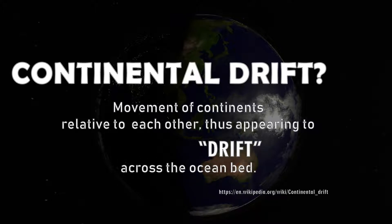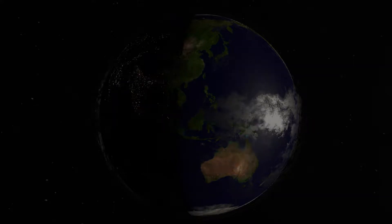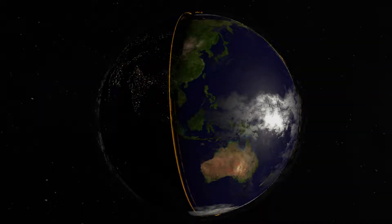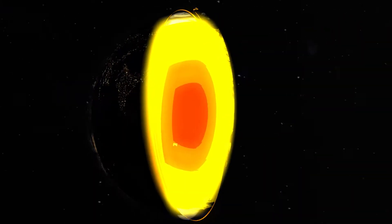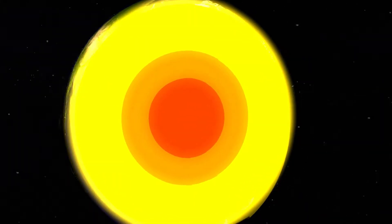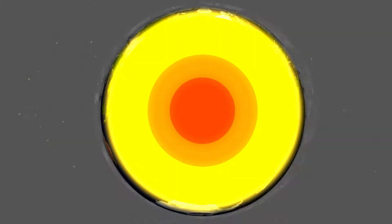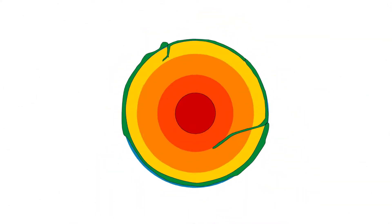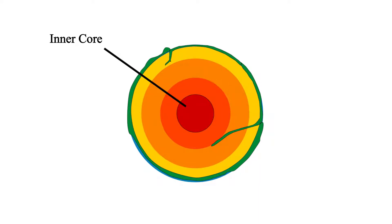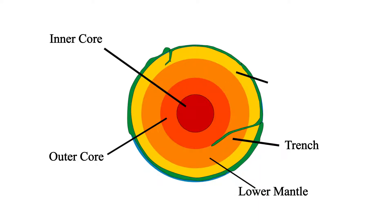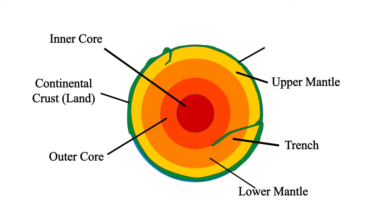Now we will cut the Earth open to reveal how the layers are stacked. Here we can see in more detail that it consists of the inner and outer core, lower and upper mantle, and the crusts.